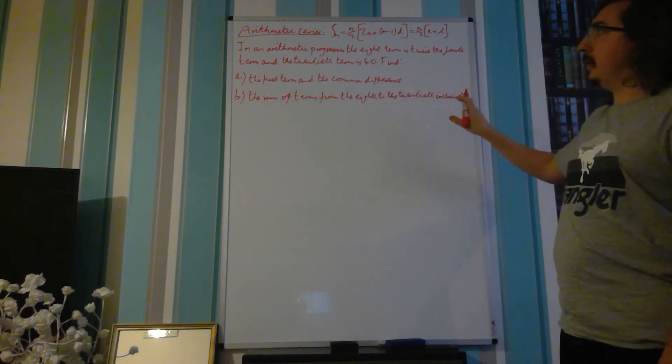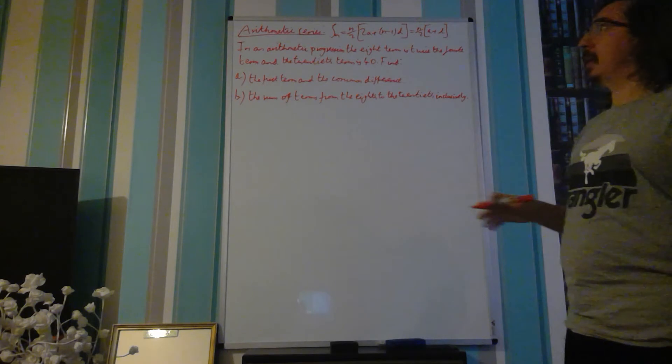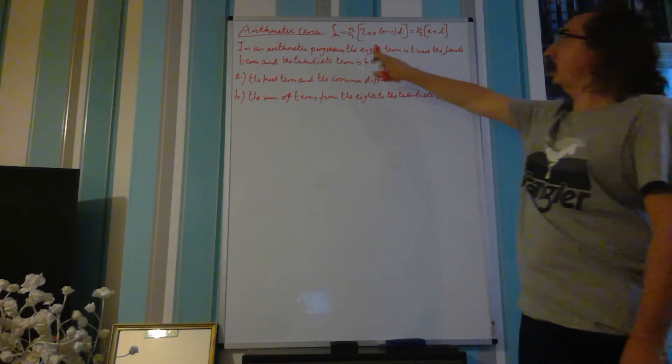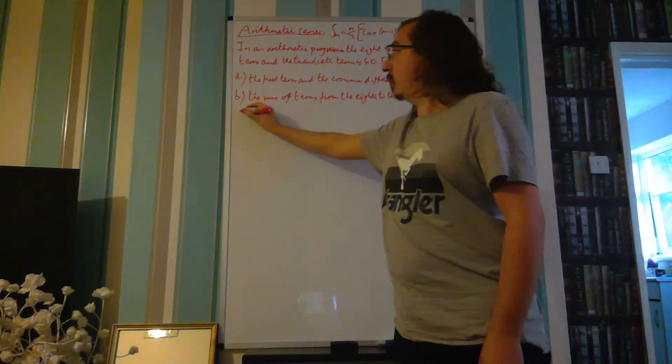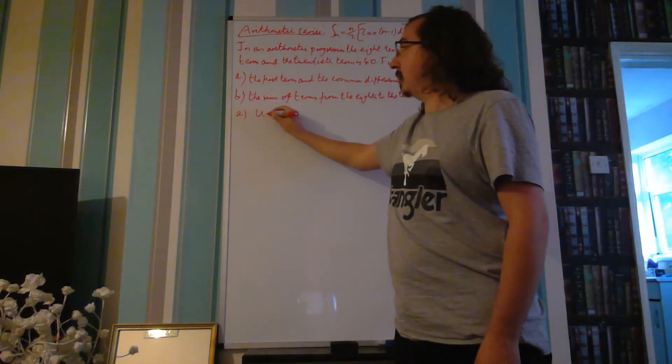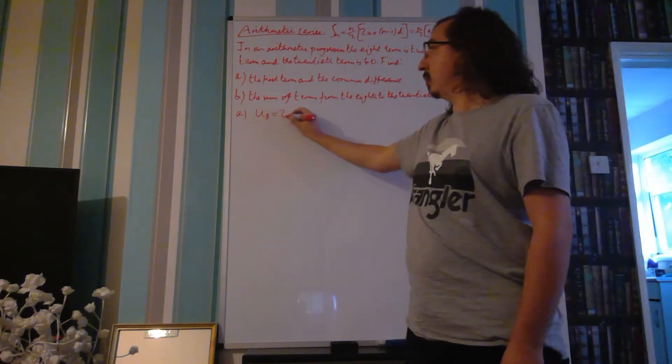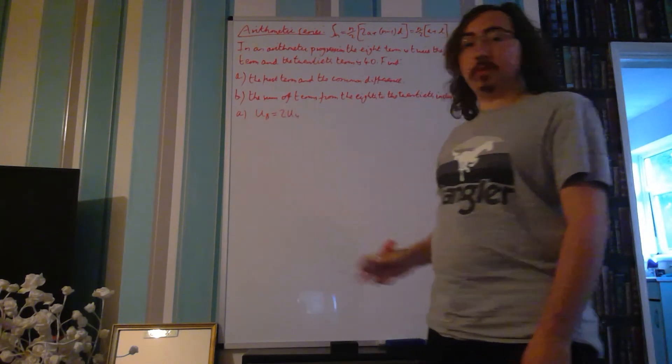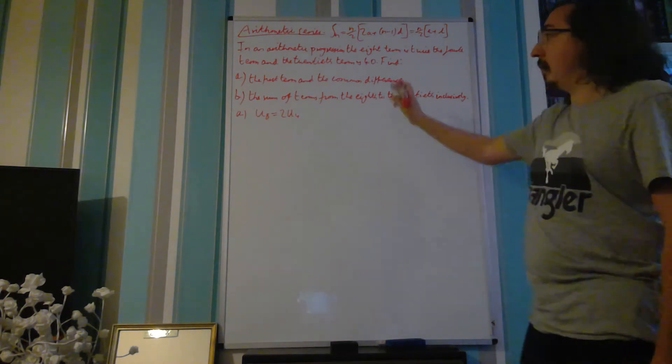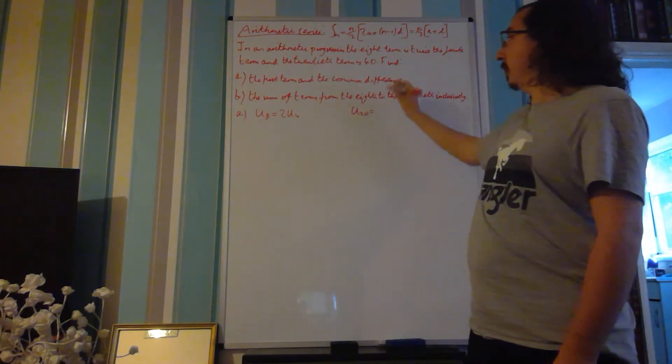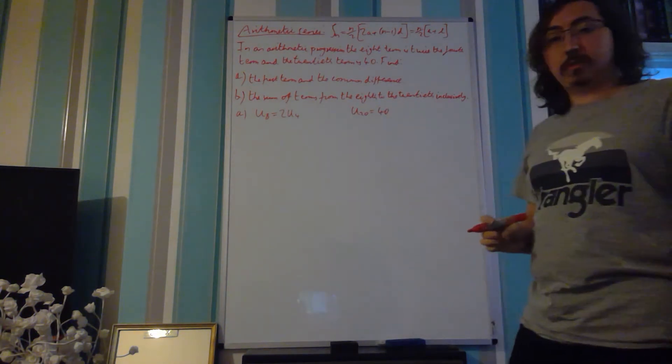So, in this problem we'll deal with part A first. We're given some information, so let's see if we can extract that. First of all, we are told that the 8th term is equal to twice the 4th term, so in other words 2 times U4, and we are told that the 20th term, U20, is equal to 40.